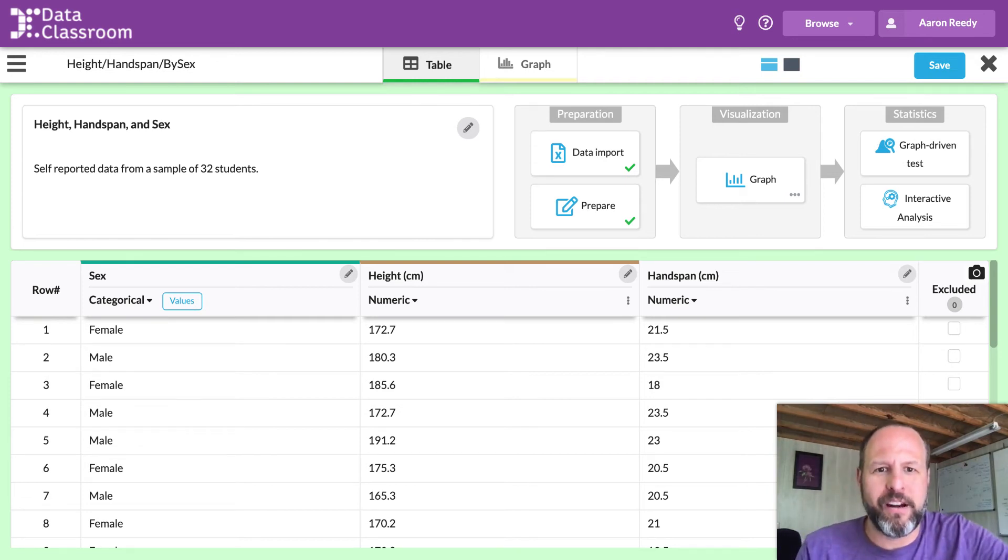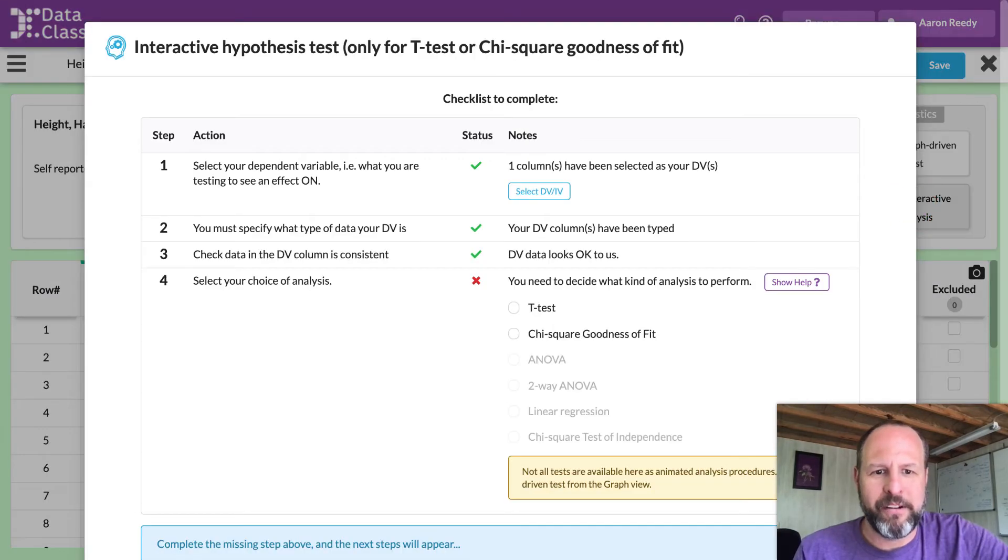So here we are with a data set open. You can see we have this data flow up here: preparation, visualization, statistics. This is a guide to help you in working with your own data. I'm going to click on interactive analysis right here. You can see where the red circle appears to open up the interactive analysis. And what this opened up is a checklist to help me prepare my data for a statistical test and to help make sure I have an appropriate statistical test selected.